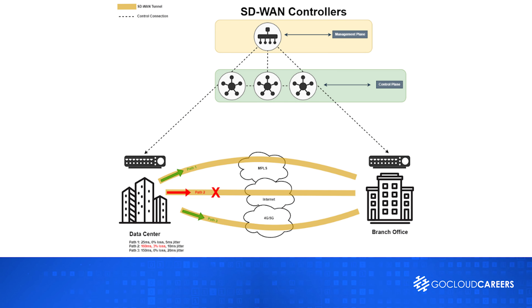The SD-WAN edge devices and the central controller work together to monitor network performance. The edge devices use protocols to transmit information about network connections — such as speed, latency, and packet loss — back to the central controller. That controller can then either proactively push policies to edge devices on how to handle specific situations, or make real-time decisions when performance thresholds are breached.